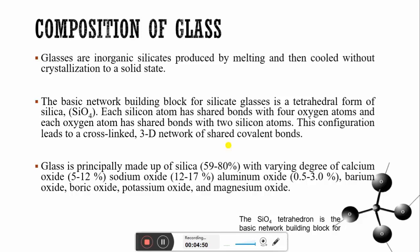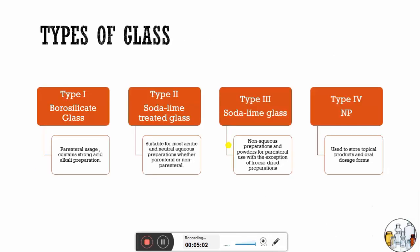Glass is principally made up of silica with varying concentrations of calcium, sodium, aluminium, boric, potassium, and magnesium oxides. According to United States Pharmacopoeia, glasses can be divided into four types: Type 1 glass is called borosilicate glass, Type 2 is treated soda lime glass, Type 3 is plain soda lime glass, and Type 4 is non-parenteral glass.